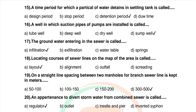Question 18: Locating the course of sewer line on the map of the area is called — options: layout, alignment, outfall, secreting. Correct answer: layout. Question 19: On a trading line, spacing between two manholes for a branch sewer line is kept in meters — options: 50–100, 100–150, 150–200, 300–500. Correct answer: 300–500.